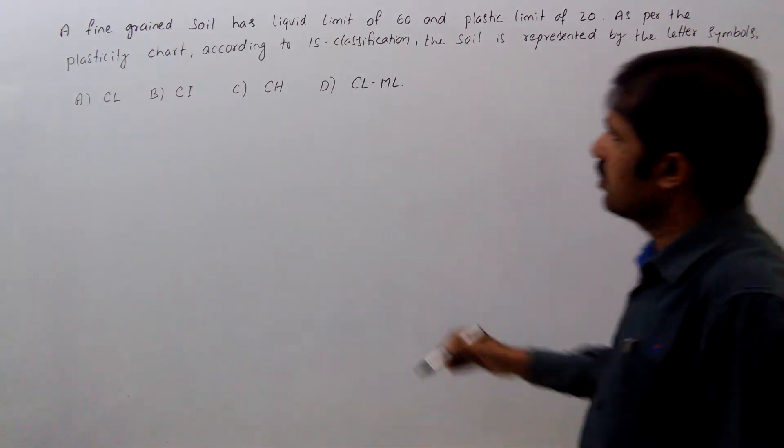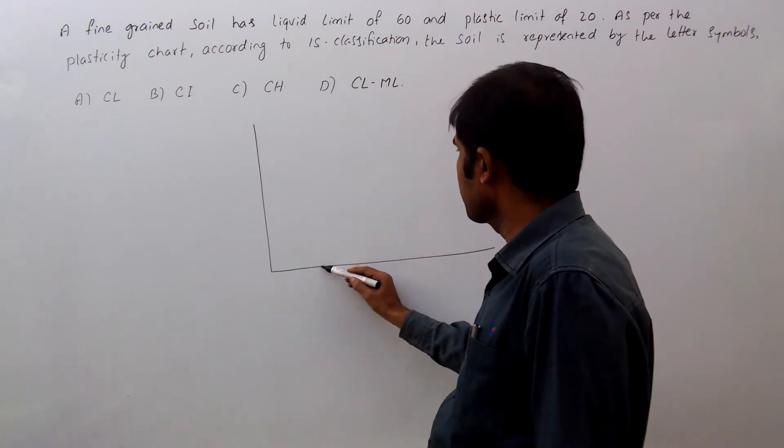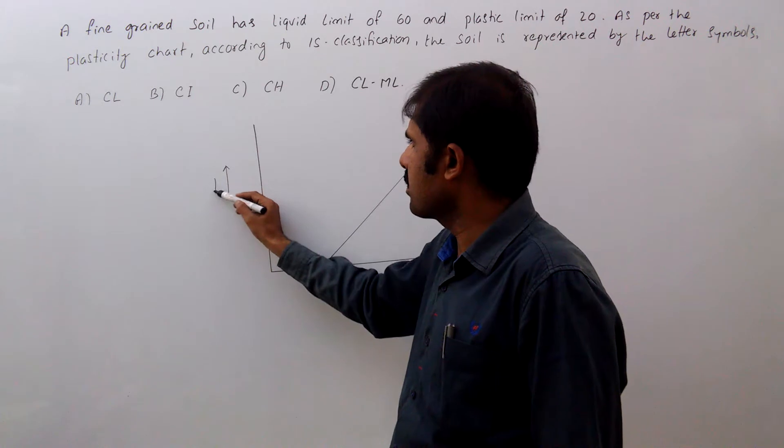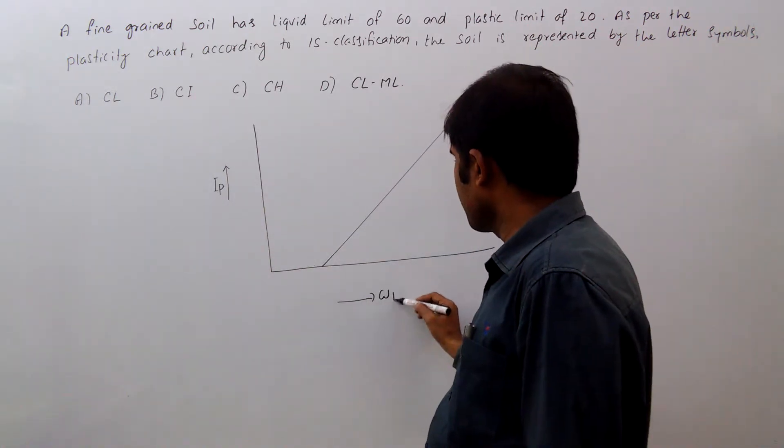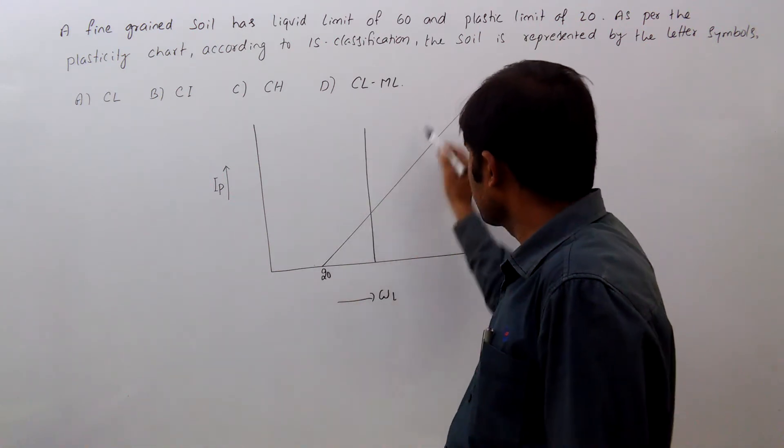So first draw the plasticity chart. This direction is IP, plasticity index, and this is liquid limit WL. A line starts at 20 and two vertical lines will be there.